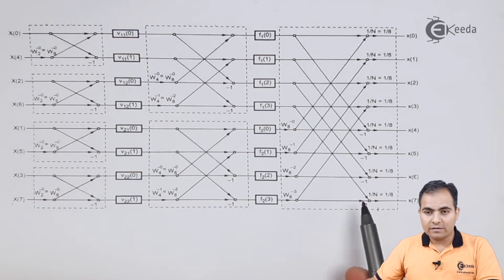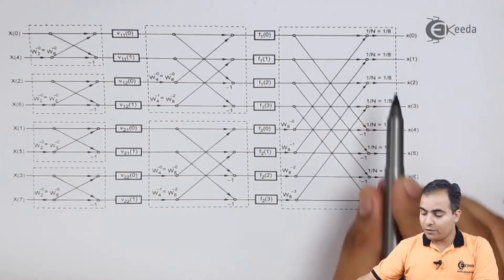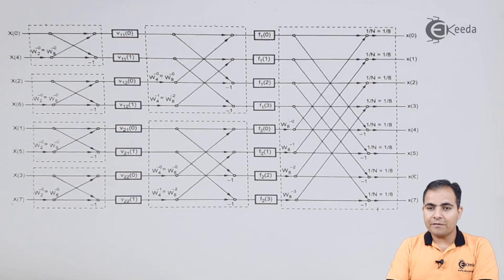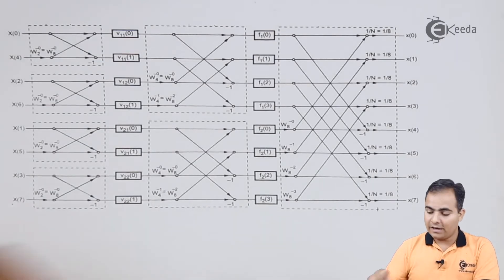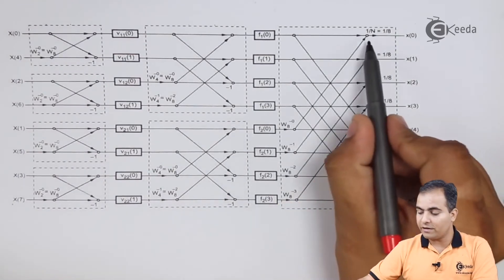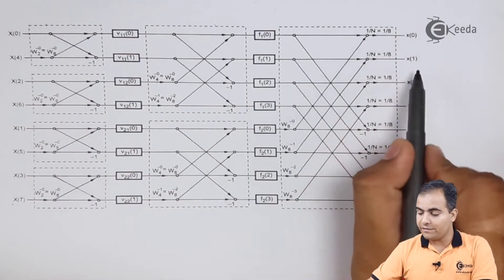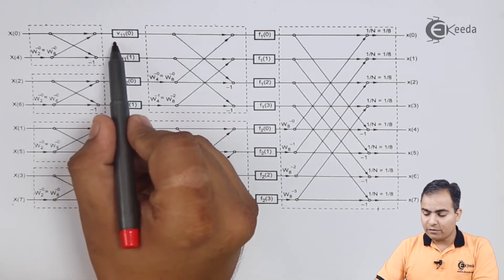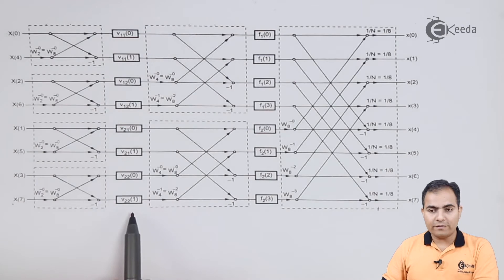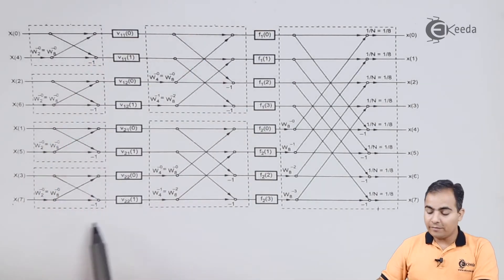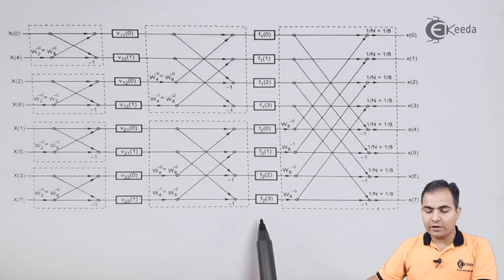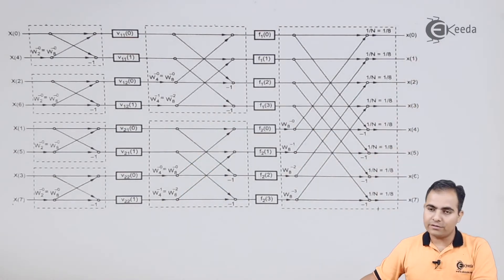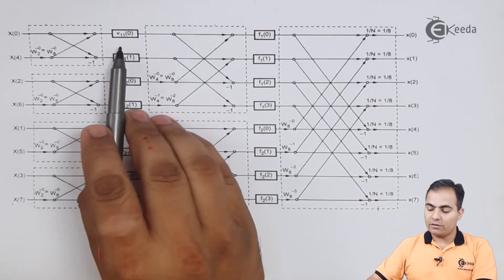Now at the end, we know the formula: in IFFT we always multiply the whole summation value by 1/N. Here we are calculating 8 points, so we divide by 1/8, multiplying each and every sample by 1/8. First we will calculate v11[0] to v22[1], substitute all values in the butterfly diagram, then calculate f11[0] to f2[3], substitute again, and then move on to x[0] to x[7].